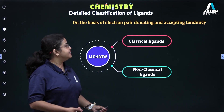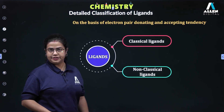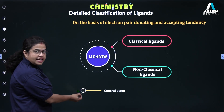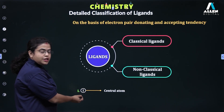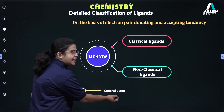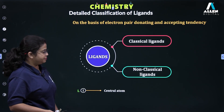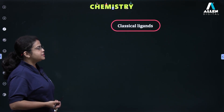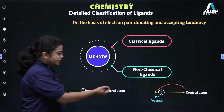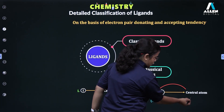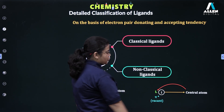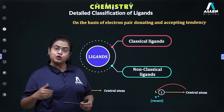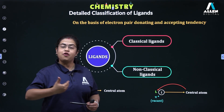Ligands are classified as classical ligands and non-classical ligands. A classical ligand is one which acts as a donor — see the lone pair being donated to the central metal atom or ion. In the non-classical case, what we see is the central metal atom or ion donating back its electrons to the ligand.